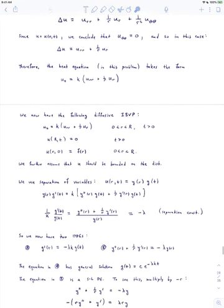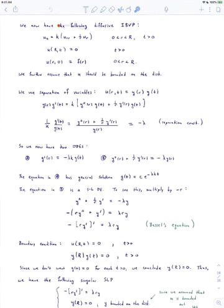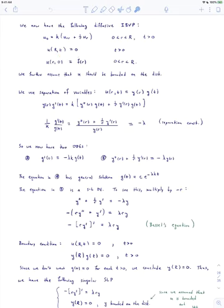This gives us the following diffusive initial boundary value problem. We have our heat equation: u sub t equals k times the Laplacian of u in polar coordinates where u doesn't depend on theta, so it's u sub rr plus 1 over r times u sub r. We also have our boundary condition that at all times along the boundary, u at capital R comma t equals 0. And we have our initial temperature u at r comma 0 given by the prescribed function f at r. We further assume that u should be bounded on the disk.